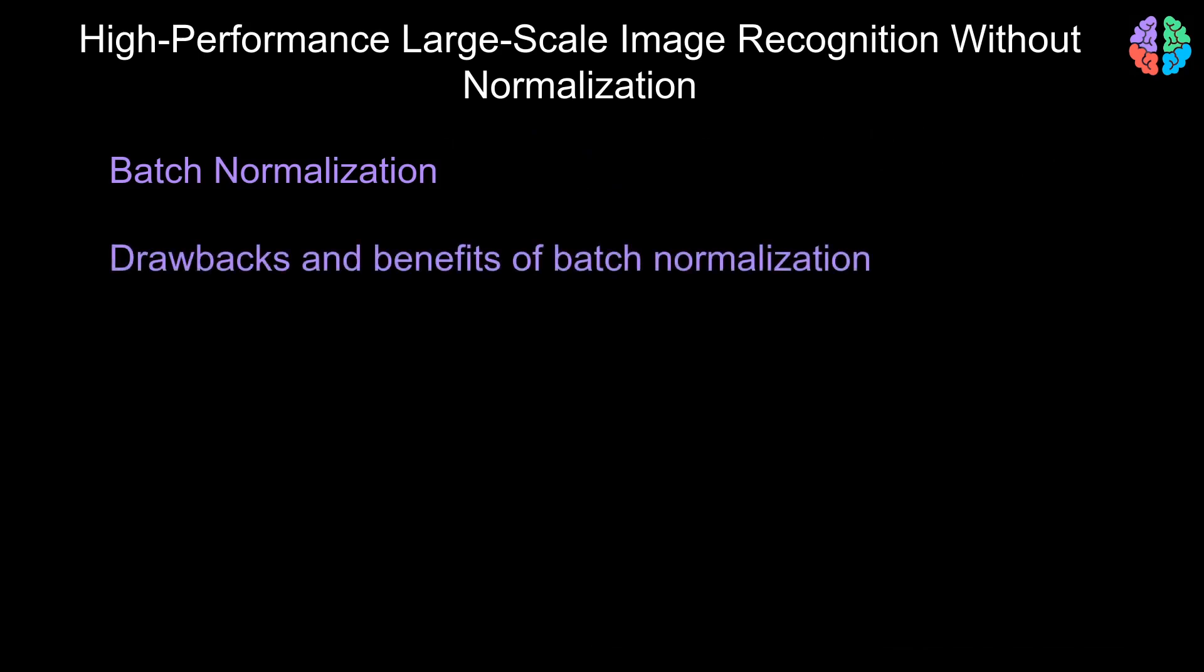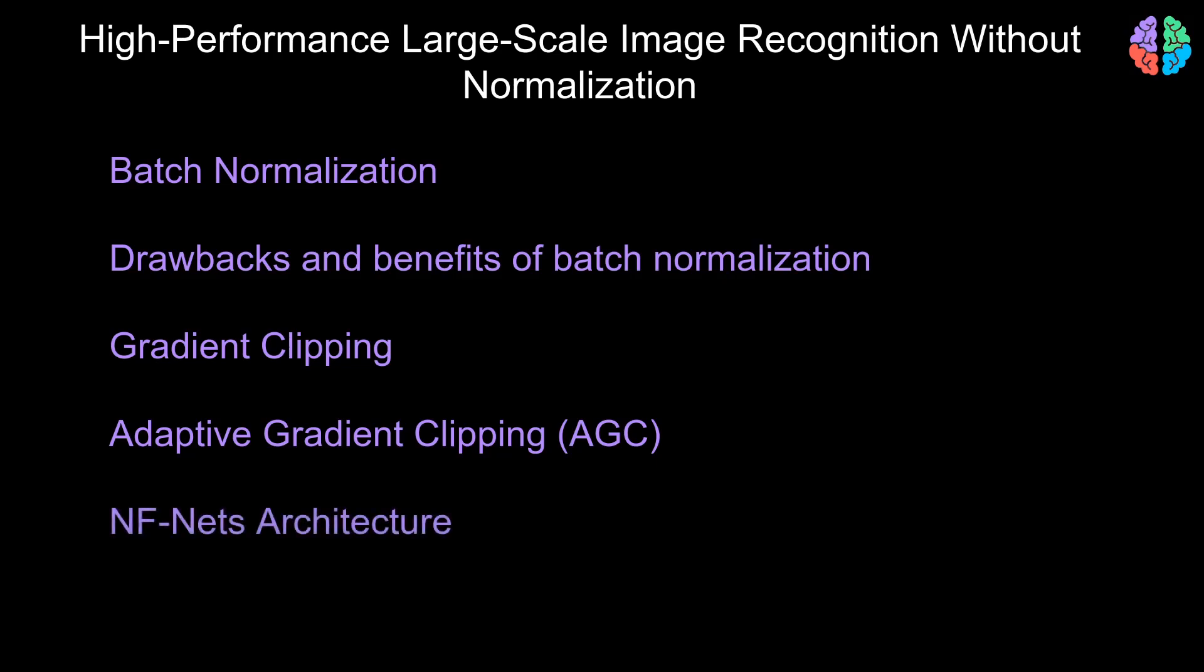In this video, I'll be starting with a brief overview of batch normalization, followed by the drawbacks of batch normalization and the benefits of it. We will then look at gradient clipping and then the adaptive gradient clipping, which is the main contribution of this paper. And of course, we'll then look at the results and the architecture of NFNets.